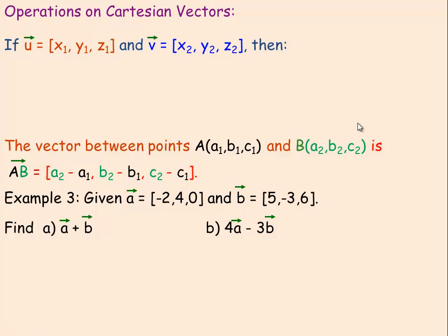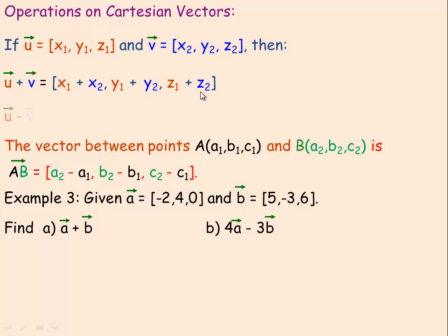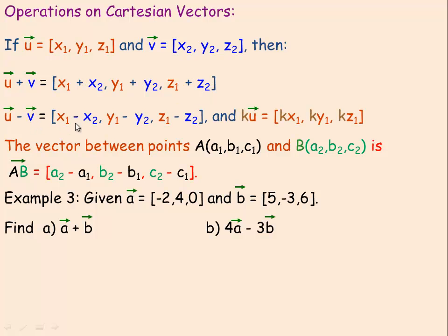Now some operations on vectors in three dimensional space. If u = (x1, y1, z1) and v = (x2, y2, z2), then to add the vectors we add the like components — just like in two dimensional space. We add the two x components, the two y components, and the two z components. Same idea with subtraction: x1 − x2, y1 − y2, z1 − z2. For scalar multiplication, k is a scalar — a real number — so k times vector u would be (kx1, ky1, kz1).